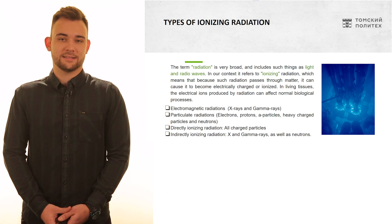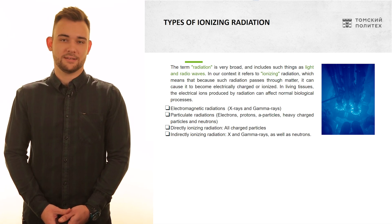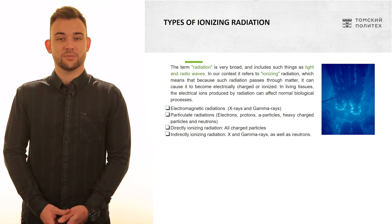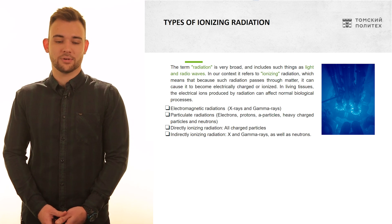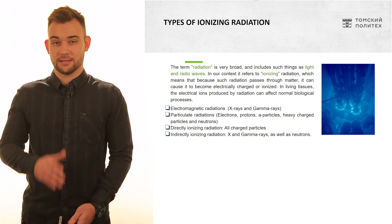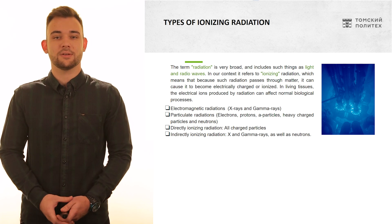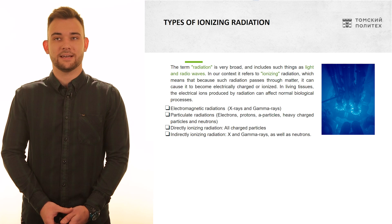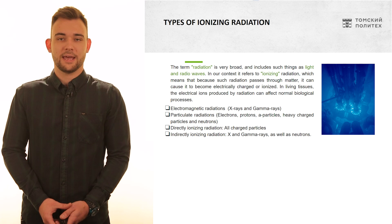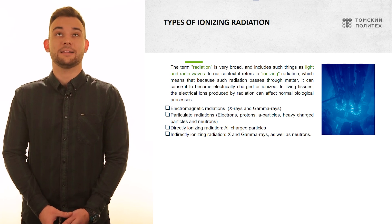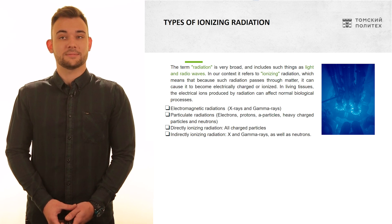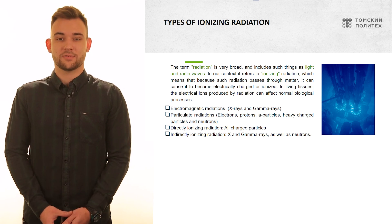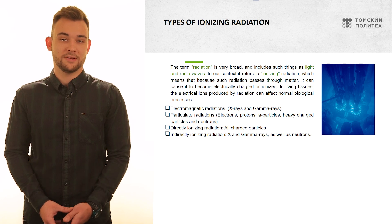To begin with, let's take a look at what radiation is. By saying the word radiation, light or radio waves might be understood. But in this topic we're going to concentrate only on ionizing radiation, which means that when it penetrates through matter, it ionizes the substance and produces electrically charged particles or ions, and by doing so it can affect the structure of material or living tissues.